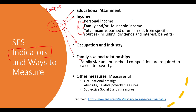Finally, family size and relationships are important. For example, if one family earns thirty thousand dollars per year and consists of two people, versus another family that earns thirty thousand dollars per year but consists of six people, the SES of these two families could be extremely different because the money is shared between six people in one case and only two in the other. So family size does have a significant influence on SES.